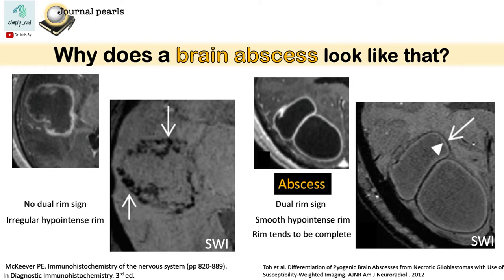This case on the left side of the screen is a necrotic glioblastoma. So why is the appearance very different? The difference lies in what causes the hypo-intense signal. For the abscess, the hypo-intense rim is due to the paramagnetic free radicals from the macrophages, while in glioblastoma, the hypo-intense rim is due to the blood products. That is why it has a very irregular appearance.